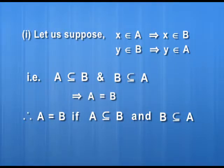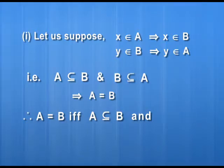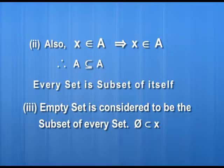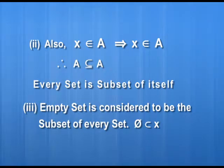The definition of equality can be stated as: two sets A and B are said to be equal if and only if A is contained in B and B is contained in A. Additionally, if x belongs to A, any element in set A will also be in set A. Symbolically, x belongs to A implies x belongs to A — meaning every set A is a subset of itself. Also, the empty set is a subset of each set.